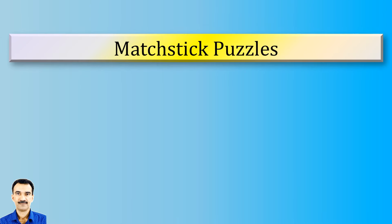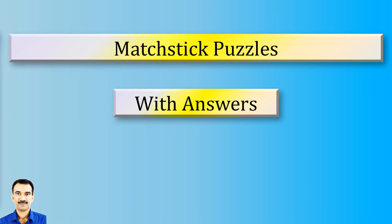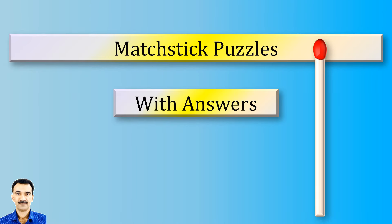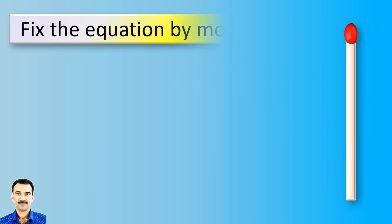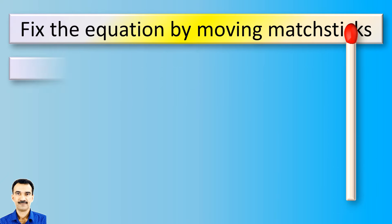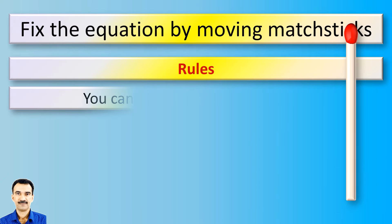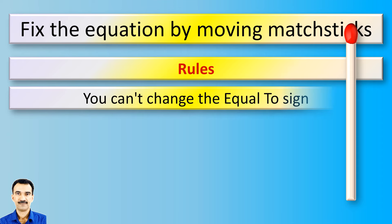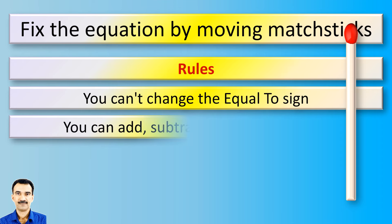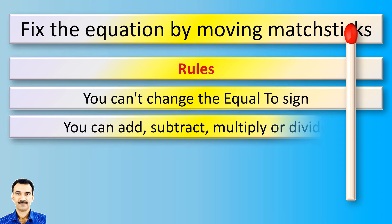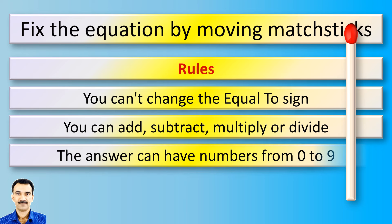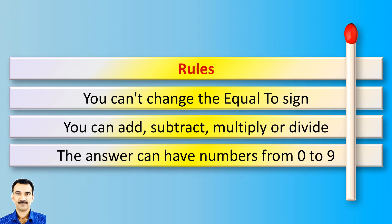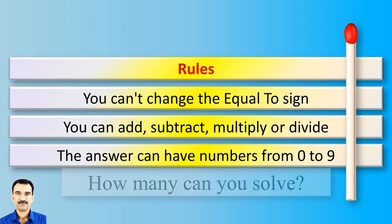Welcome to another video of Matchstick Puzzles with Answers. Please keep the rules in mind: you cannot change the equal to sign. You can add, subtract, multiply or divide. The answers can have numbers from 0 to 9. How many puzzles can you solve?